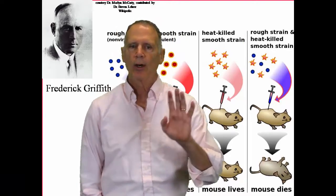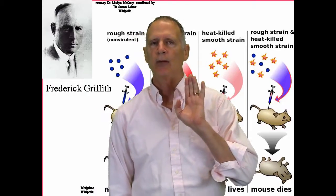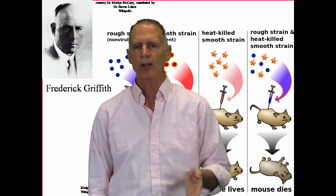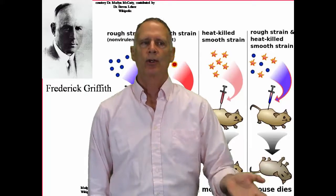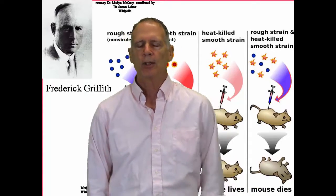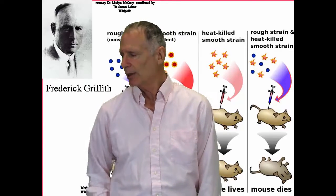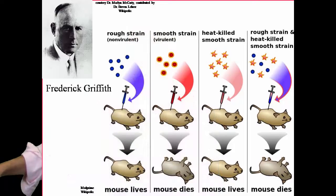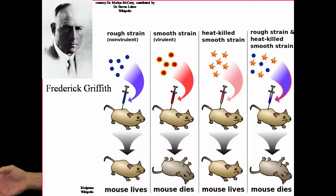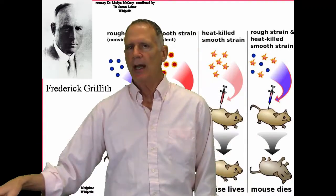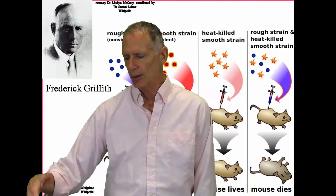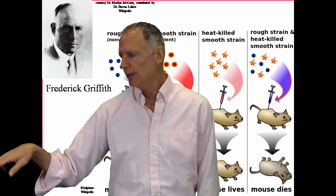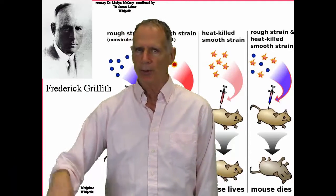Well, the next thing he does is he heats up the smooth strain, which is virulent, remember, and he kills the bacteria by heating it up. So when he injects it in the mouse, the mouse doesn't die of pneumonia. But what happens in the next step is he mixes the heated, smooth strain, which should be dead, and the rough strain. Both of them at this point are nonvirulent. He injects it in the mouse and the mouse dies.